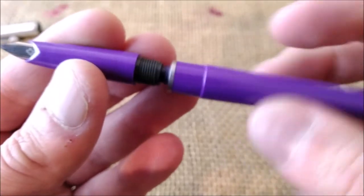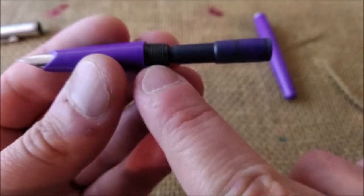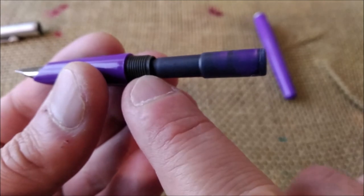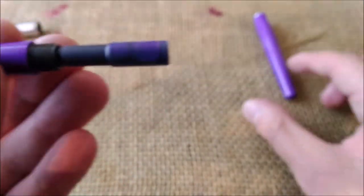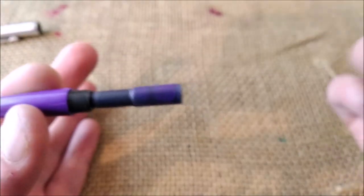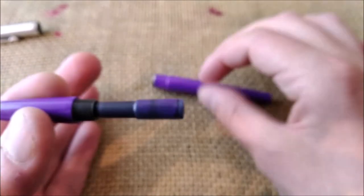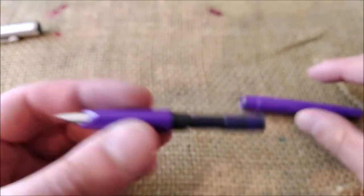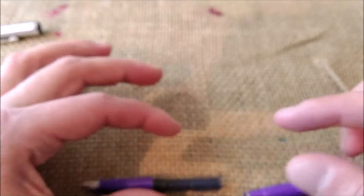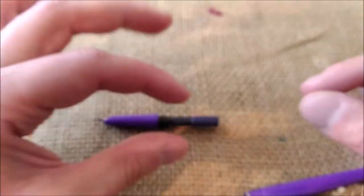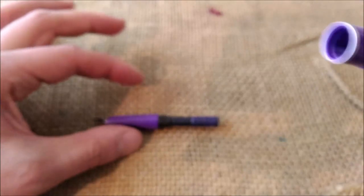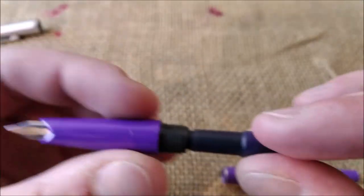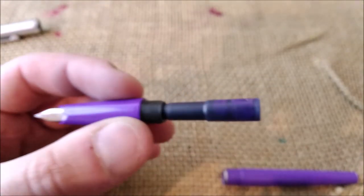When you unscrew the barrel you have these black threads of the section. It takes cartridge, maybe converter. This one came with a metal piece inside that is made to have two cartridges stored inside the pen. However, the cartridges for this pen are no longer available.